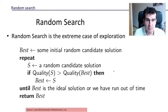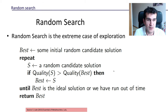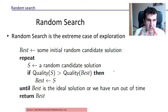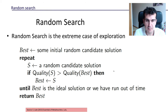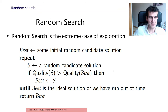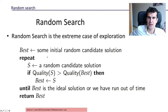That's it — that's random search. This is the extreme case of exploration: we're not using any knowledge, we're not transferring knowledge from one iteration to the next. It's just sampling and taking the best one in the sample. Let's look at the pseudocode a little bit more slowly.